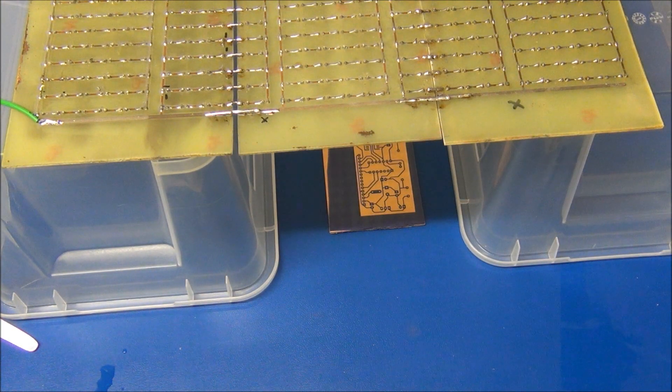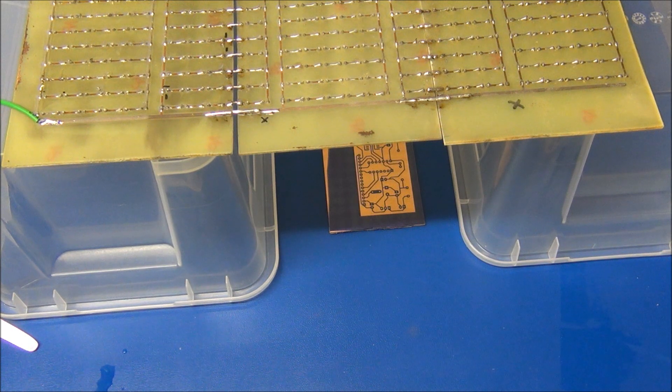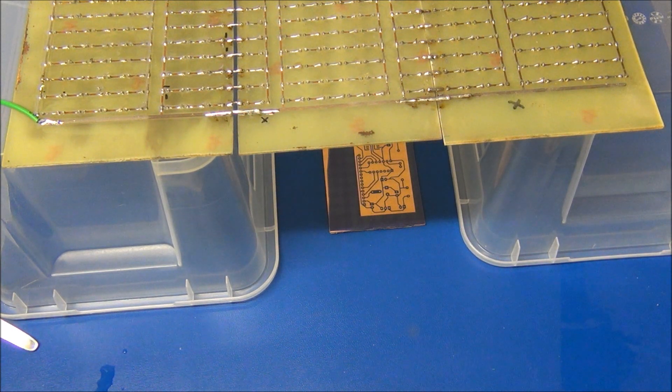To fully harden the photoresist, expose the board to UV light for another 2.5 minutes.